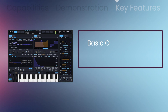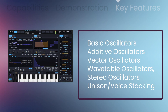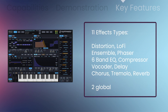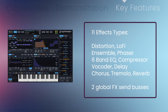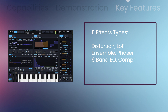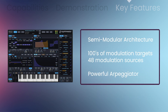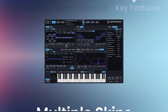With its multi-algorithm oscillators, analog modeled zero delay feedback filters, flexible effects routing with 11 types of high quality effects, 48 separate modulation sources and hundreds of modulation targets, SynthMaster 2.9 sounds fantastic and stays out of your way while you work.